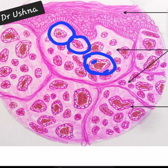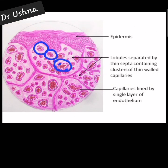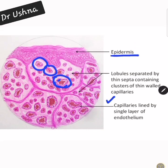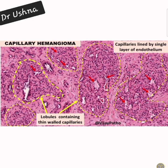The whole collection of capillaries forms a lobular arrangement. You can see normal epidermis, then lobules of different capillaries separated by septa, and the capillaries are lined by a single layer of endothelium. This is the basic concept of hemangioma when you see the different pictures in microscopy.